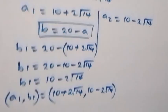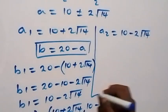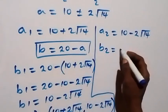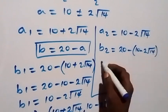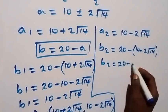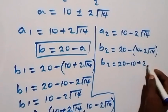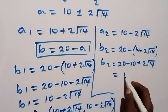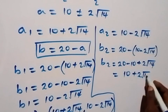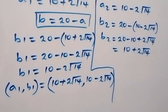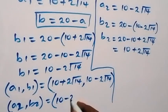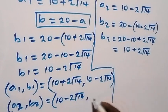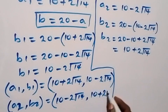Then also here we can get B2 using the relation: B2 now equals to 20 minus A2, which is 10 minus 2 root of 14. Opening the brackets, B2 now equals to 20 minus 10 plus 2 root of 14. So B2 equals to 10 plus 2 root of 14. The second solution set is A2 equals to 10 minus 2 root of 14, B2 equals to 10 plus 2 root of 14.